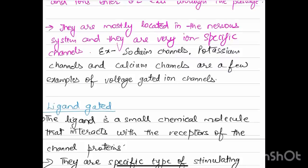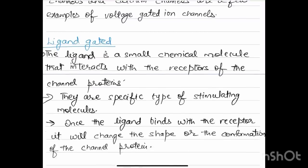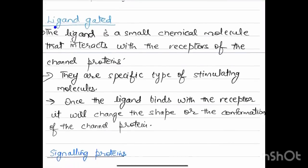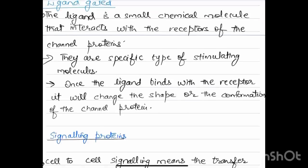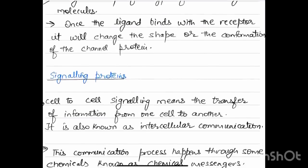Next type of channels are ligand-gated. The ligand is a small chemical molecule that interacts with the receptors of the channel proteins. They are specific types of stimulating molecules. Once the ligand binds with the receptor, it will change the shape or the conformation of the channel protein accordingly.